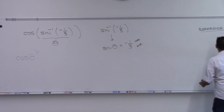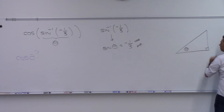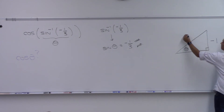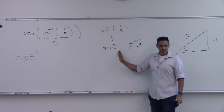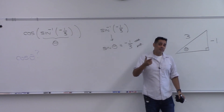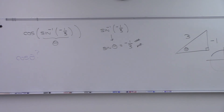Let me draw a triangle with θ here. The opposite side is negative 1 and the hypotenuse is 3. A negative side doesn't normally make sense, but this triangle is actually in the fourth quadrant. You go down one and out three, so this point has a y-coordinate of negative 1.